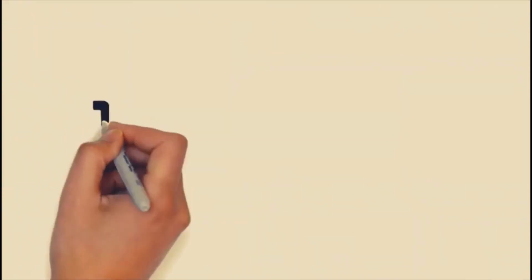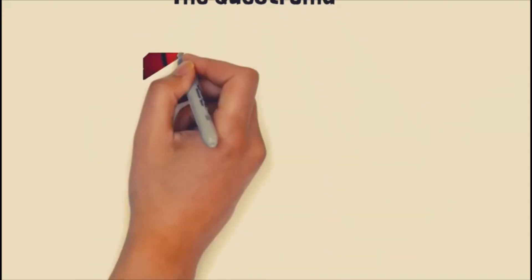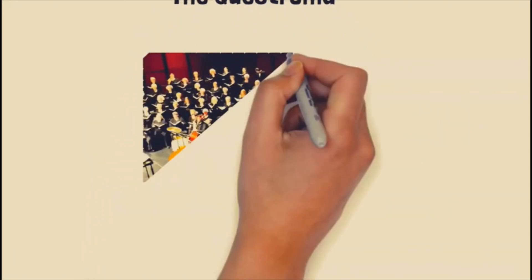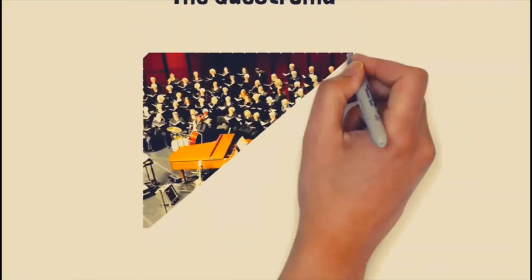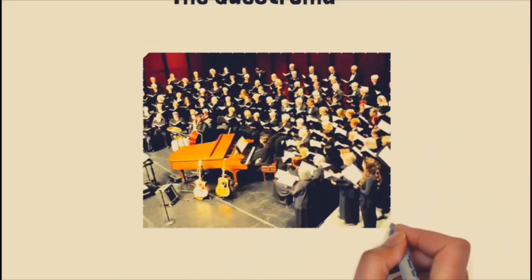The Kestroma is located three steps below the sanctuary and one step above the Haikala. This is where the altar servers stand. It connects both the sanctuary, which represents heaven, and the Haikala, which represents earth. The part of the Kestroma where the choir stands is separated with railings.